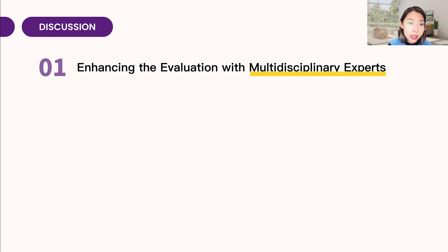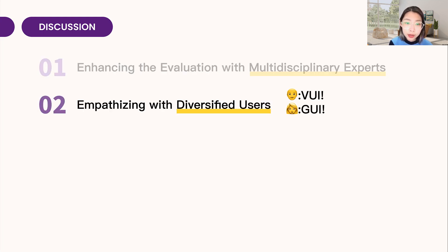Smart homes are evolving towards AI integration, demanding expertise in both design and technology for effective problem-solving. Heuristic evaluation, conducted by experts, lacks consideration for user diversity in real-home settings. Variation in age, ability, and tech proficiency leads to diverse usability problems. For instance, older users may require voice interaction, while younger users may prefer GUI prompts. Making solutions for everyone shows it's important to consider different backgrounds to make products easier to use.